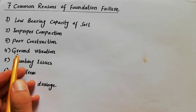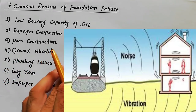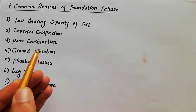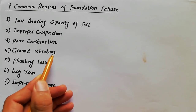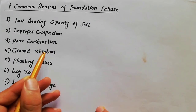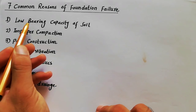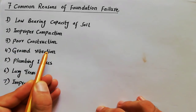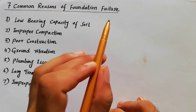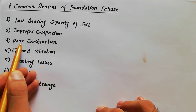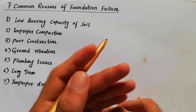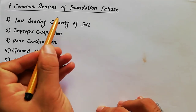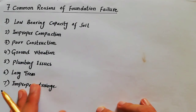The fourth reason is ground vibration. Earthquakes are the most common cause of foundation failure due to ground vibrations — during an earthquake your building vibrates, which can cause failure. If you do proper construction and your bearing capacity of soil is good, the effect of ground vibration will be lower. Poor construction and low bearing capacity of soil also contribute to foundation damage during ground vibration.